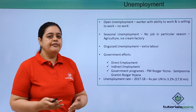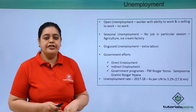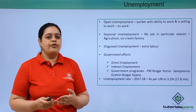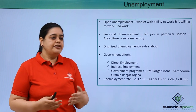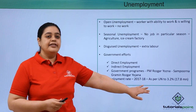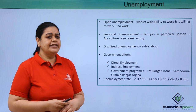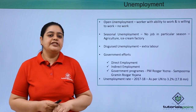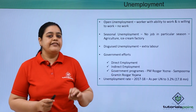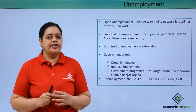We also have government programs like the Rojgar Yojana and Sampurna Grameen Rojgar Yojana — various initiatives taken by the government to ensure employment for rural and casual workers. As of today, the estimated figure from the United Nations for 2017-2018 states that 3.2% of the population would be unemployed, which is approximately 17.8 million people — a huge number of people currently unemployed in the country.